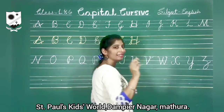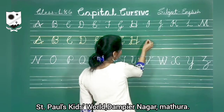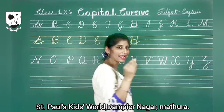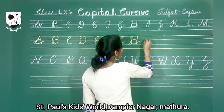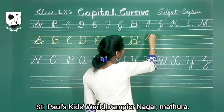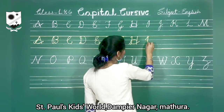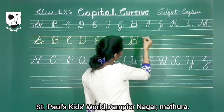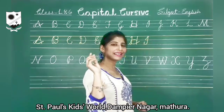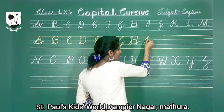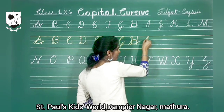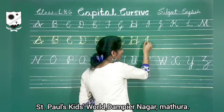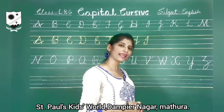Now capital I. We will start from the second line. Look here. Small slipping line. Slanting line. Straight line. Come back towards the third line and small curve. Capital I. Once again, look here. Small slipping line. Climbing line. Straight line. And then curve. And leaving. Capital I.